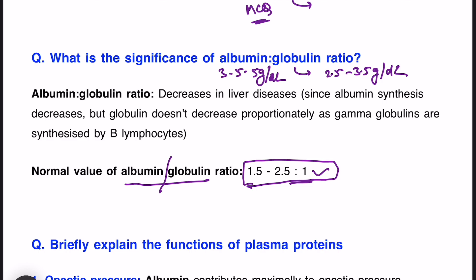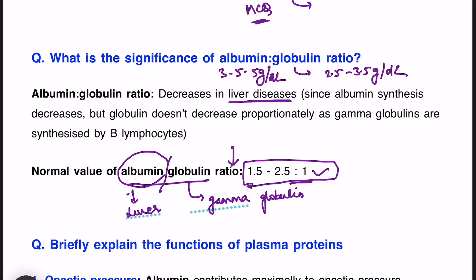This is the normal ratio — important to remember clinically because albumin levels are more compared to globulin. There are certain diseases in which the albumin-globulin ratio decreases, such as liver diseases. Why? Albumin is synthesized in the liver, and globulin is also synthesized in the liver but its gamma globulin component is synthesized by B lymphocytes. So albumin decreases more than globulin, and globulin doesn't decrease proportionately. Hence the A/G ratio decreases in liver diseases.